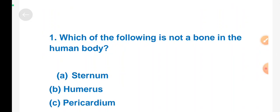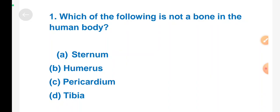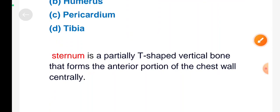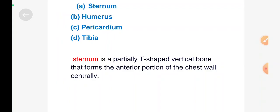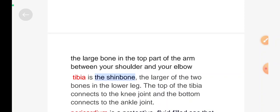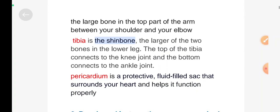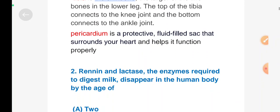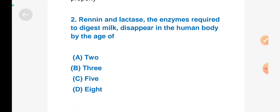Option A: sternum, Option B: humerus, Option C: pericardium, Option D: tibia. Right answer is Option C, pericardium. Sternum is a partially T-shaped vertical bone that forms the anterior portion of the chest wall centrally. The humerus is the large bone in the top part of the arm between your shoulder and your elbow. Tibia is the shinbone, the larger of the two bones in the lower leg. The top of the tibia connects to the knee joint and the bottom connects to the ankle joint. And the pericardium is a protective fluid-filled sac that surrounds your heart and helps it function properly.